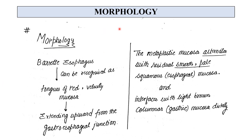With the help of endoscopy, Barrett's Esophagus can be recognized as tongues of red velvety mucosa extending upward from the gastroesophageal junction. The metaplastic mucosa alternates with residual smooth pale squamous mucosa, and distally it interfaces with light brown columnar gastric mucosa. We can also see small islands of residual pale squamous mucosa within the Barrett's mucosa.